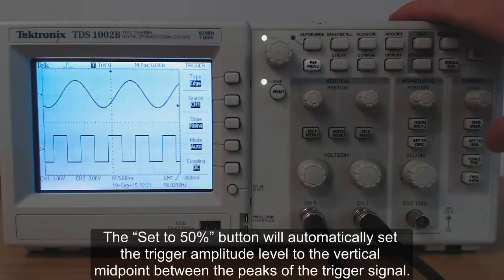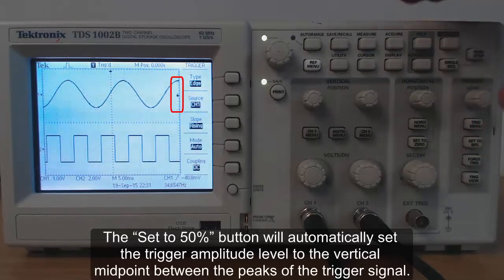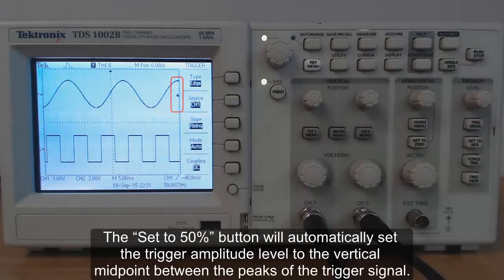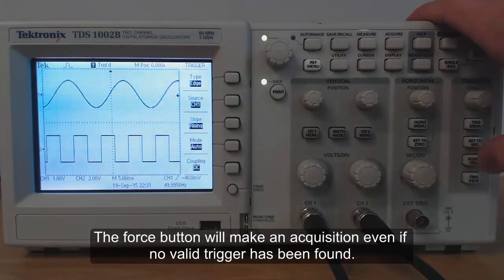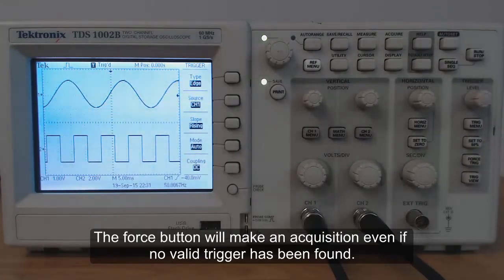The set to 50% button will automatically set the trigger amplitude level to the vertical midpoint between the peaks of the triggered signal. The force button will make an acquisition even if no valid trigger has been found.